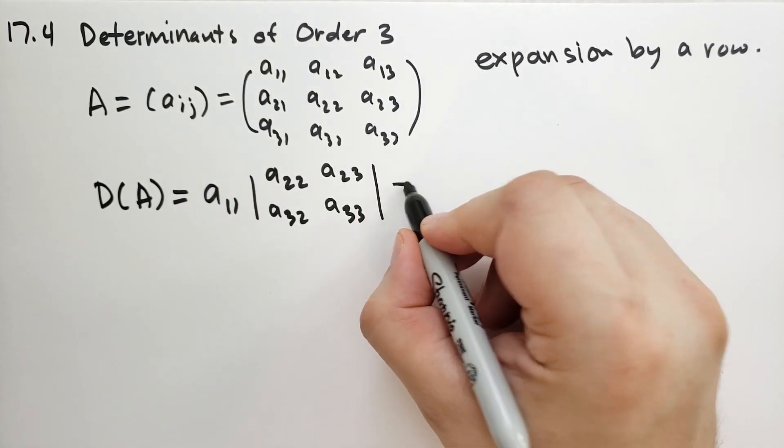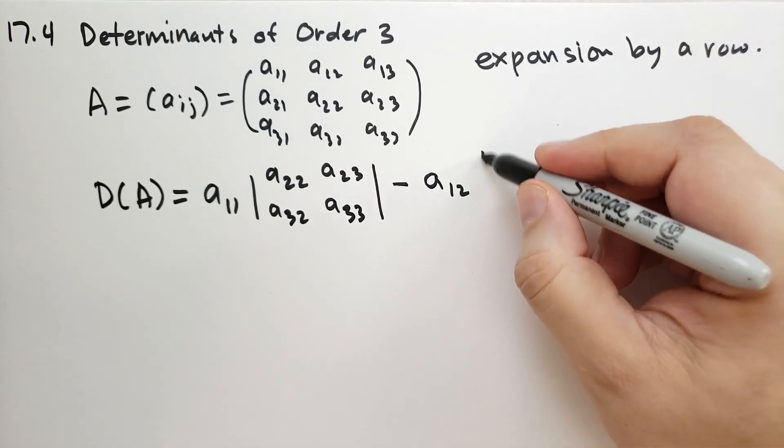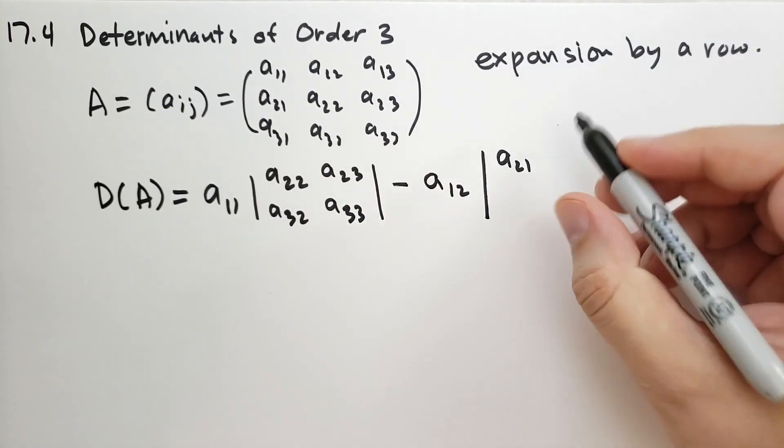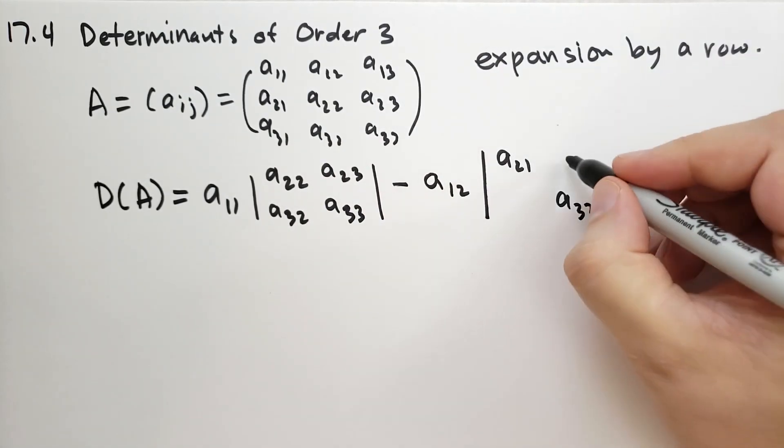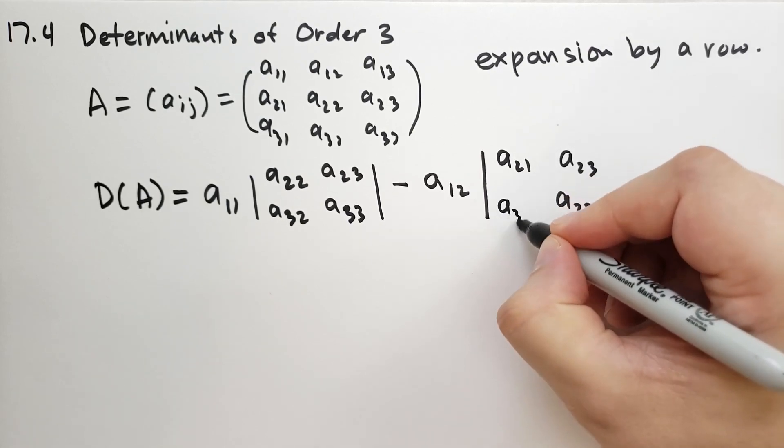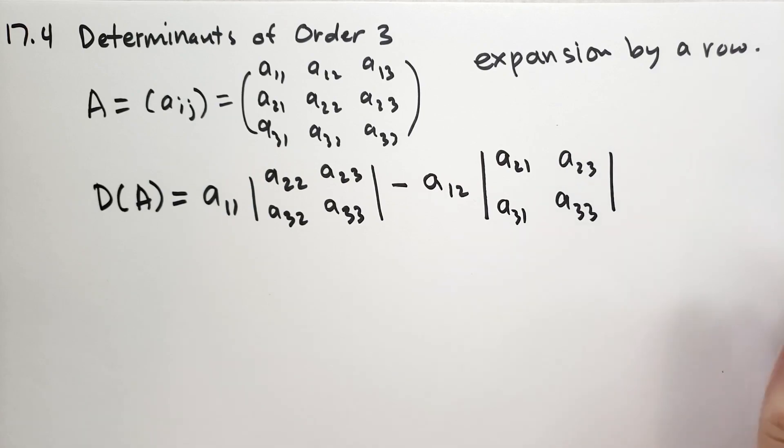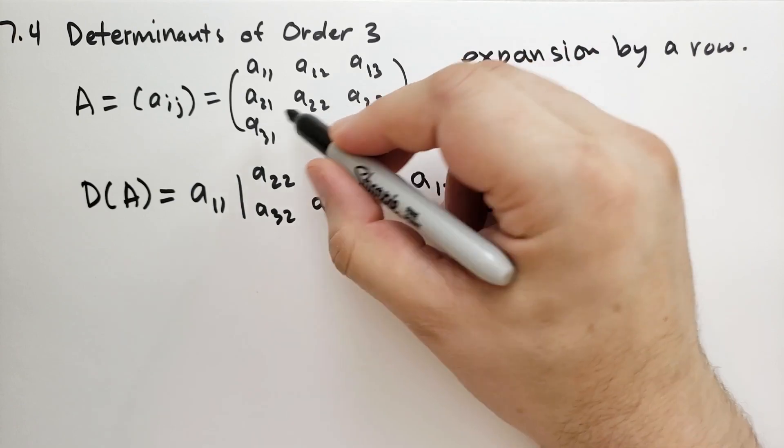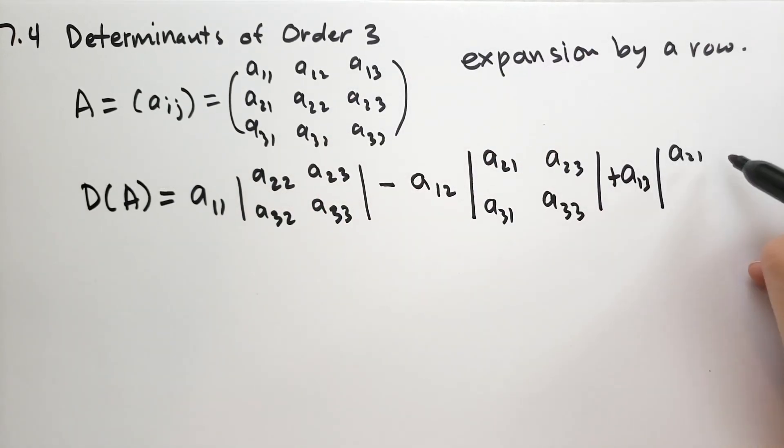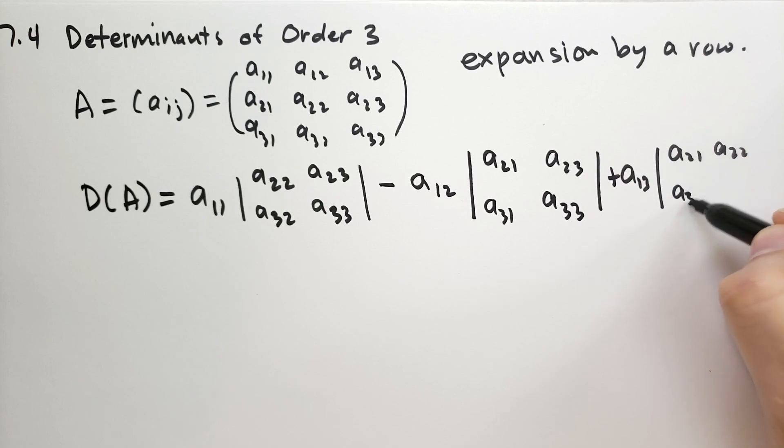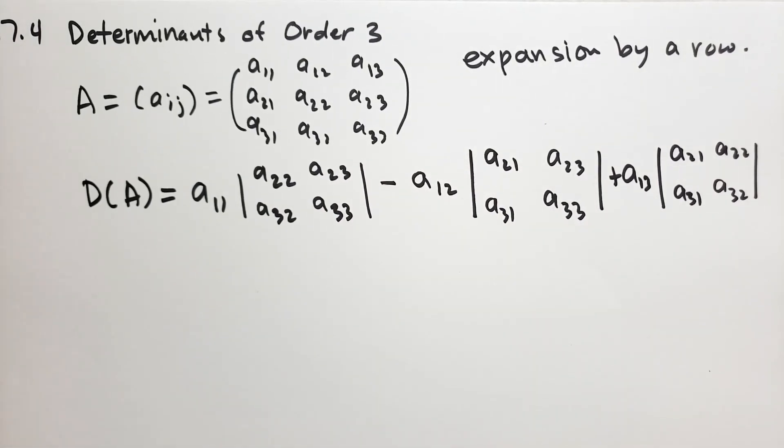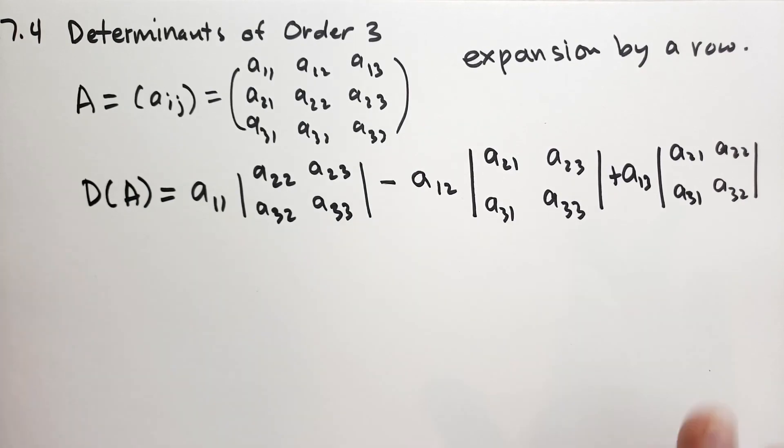Then we are going to subtract A_12 and the determinant of this matrix. So A_21, A_33, A_21, A_33, A_23, and then A_31. And finally we are going to add A_13, so this guy here, and this matrix here: A_21, A_22, A_31, A_32. Hopefully you're not catching the sound of the garbage truck in the background, that would be distracting. All right, so that is how we calculate the determinant.